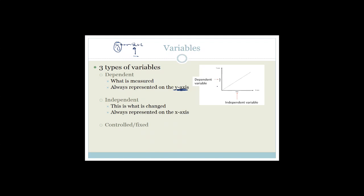The third variable is the controlled or fixed variable — these are variables that are kept constant, and the reason we keep them constant is to ensure a fair test. They like to ask you: why do you keep the temperature the same? Because the temperature might affect the outcome. So we need to keep the variables that could affect the experiment constant to ensure a fair test.